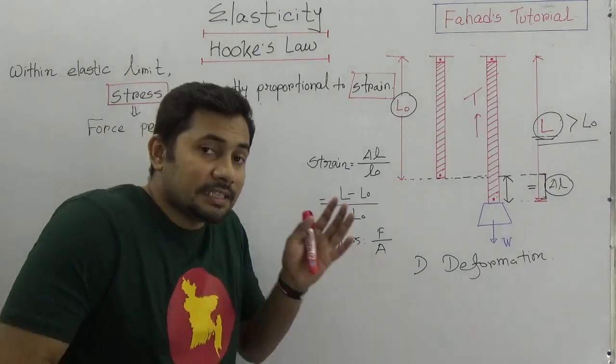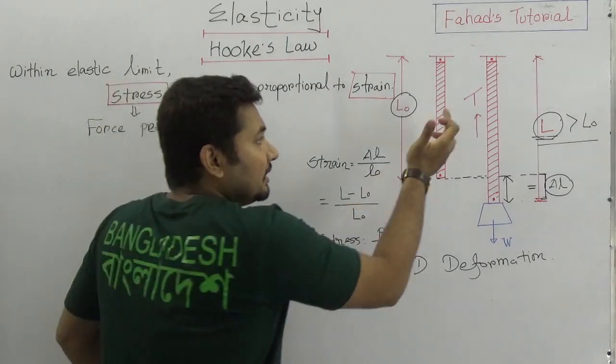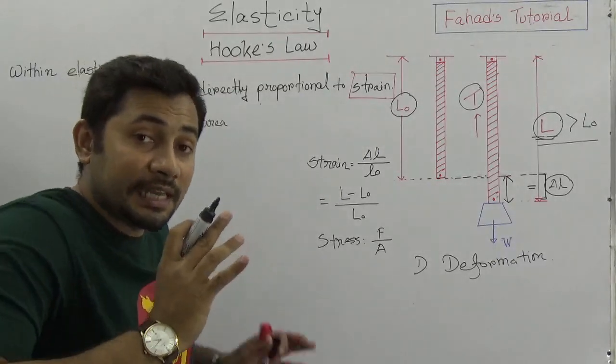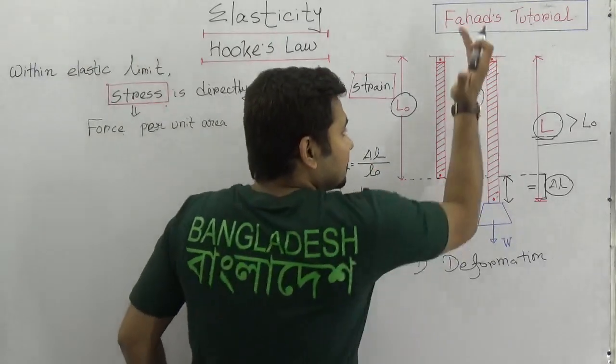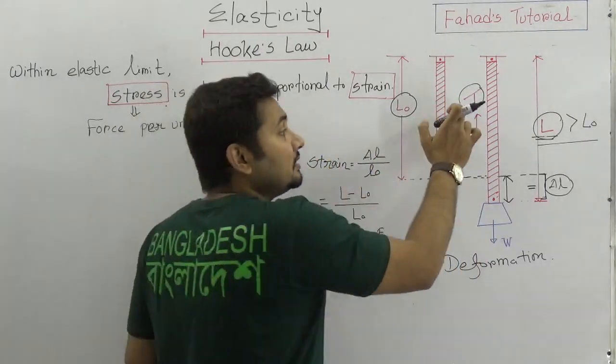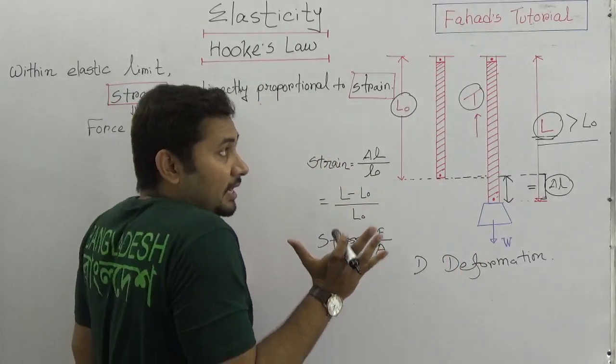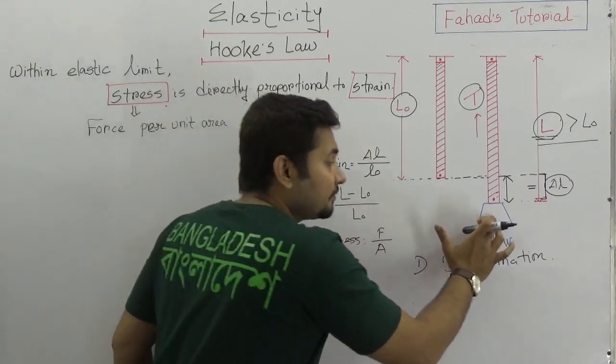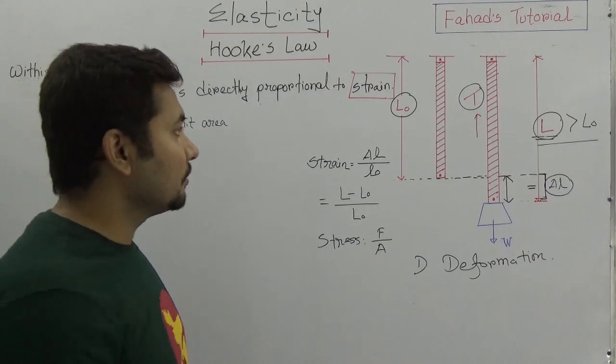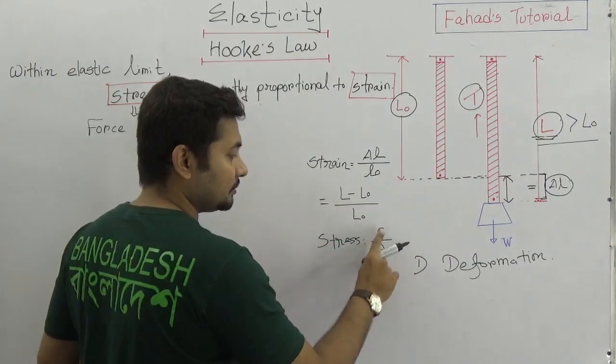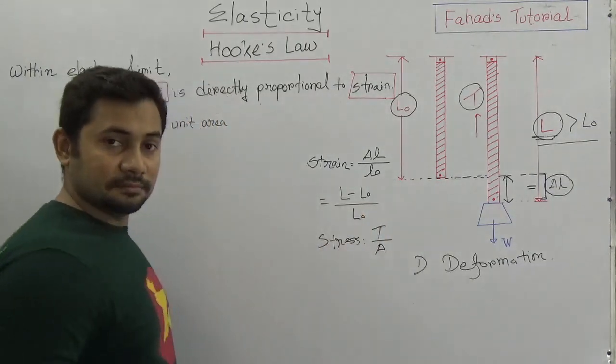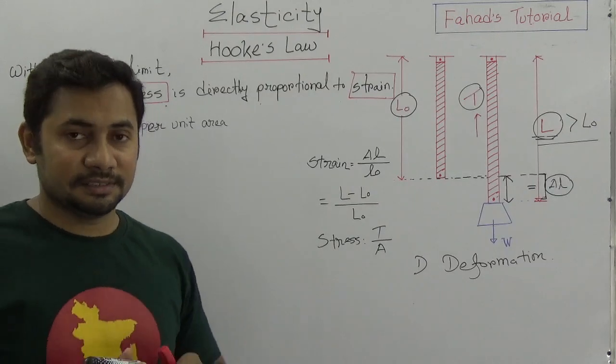But the stress is the force upon unit area which is applying for the deformations. So the force which is actually working here is this tension. This tension is a type of force which is acting against the deformation. When the elastic limit is there, this T will be working and it will try to get its own shape after removing this external force. So this tension is working here. So that means we can say instead of F by A, which is T by A.